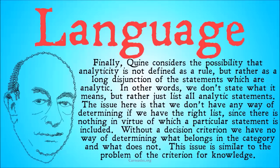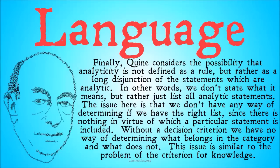Finally, Quine considers the possibility that analyticity is not defined as a rule, but rather as a long disjunction of all the statements which are analytic. We just have a pile of statements and say by convention or fiat that these are analytic — any ones that don't fit are not analytic. In other words, we don't state what it means, but rather just list all analytic statements. The issue here is that we don't have any way of determining if we have the right list or critiquing that list, since there is nothing in virtue of which a particular statement is included. Because if there were, we would actually have a definition of analyticity. Without a decision criterion, we have no way of determining what belongs in the category and what does not, other than just believing someone who says 'yeah, that sounds analytic.'